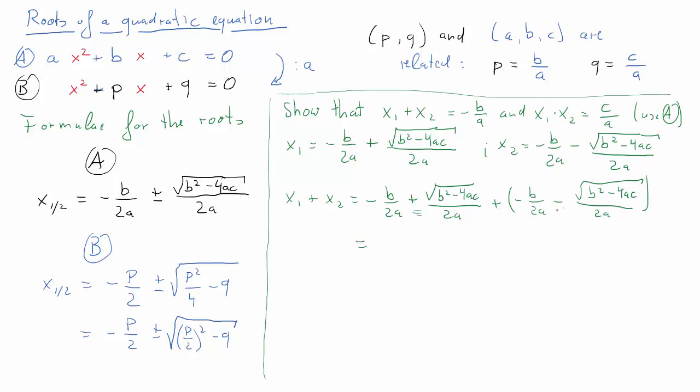So now that big second term appears once with a plus, once with a minus, so that will just cancel out. And we are left with negative b over 2a minus b over 2a. That's negative 2b over 2a, and that is of course just negative b over a, which is exactly what we were meant to establish.